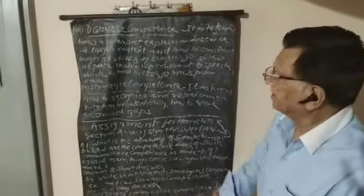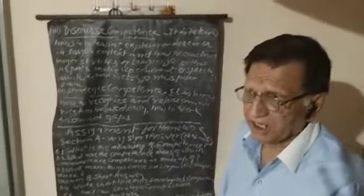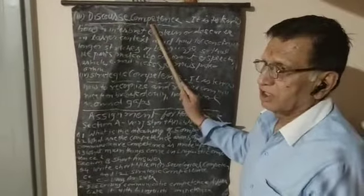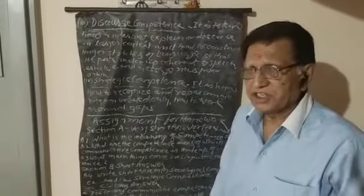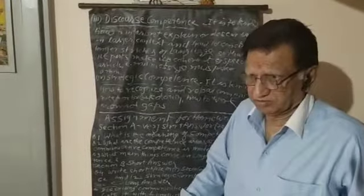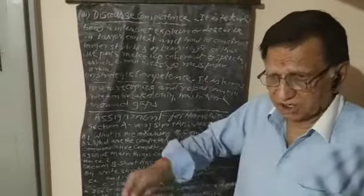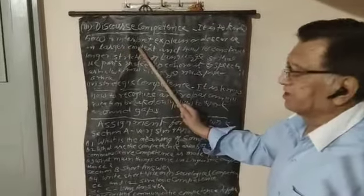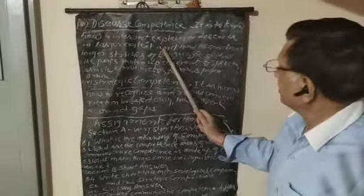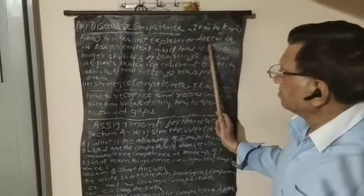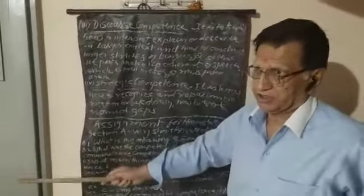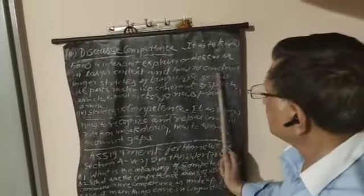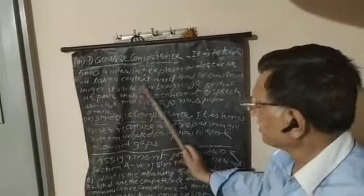Third competence area is discourse competence. Discourse competence means discussion, enlarging something. It is to know how to interpret, explain or describe in a larger context and how to construct long stretches of language.